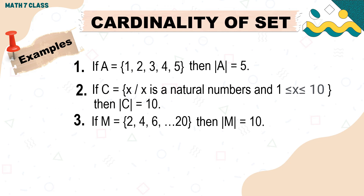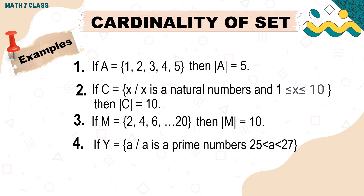Another example: if set M is a set of numbers from 2 to 20, then the cardinality of set M is equal to 10. Last example: if set Y is a set of prime numbers between 25 and 27, then the cardinality of set Y is zero, or this is a null set.